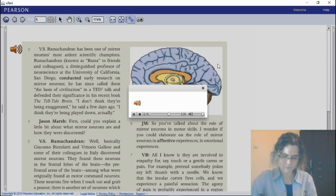I wonder if you could elaborate on the role of mirror neurons in affective experiences, in emotional experiences. All I know is they are involved in empathy for, say, touch or a gentle caress or pain. For example, pretend somebody pokes my left thumb with a needle. We know that the insular cortex fires cells and we experience a painful sensation. The agony of pain is probably experienced in a region called the anterior cingulate, where there are cells that respond to pain. The next stage in pain processing, we experience the agony, the painfulness, the affective quality of pain.